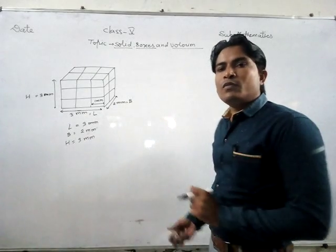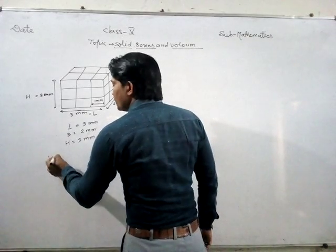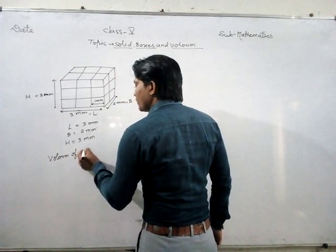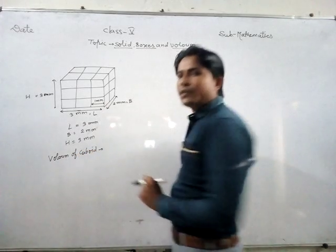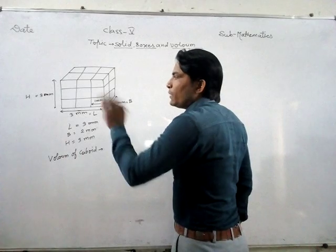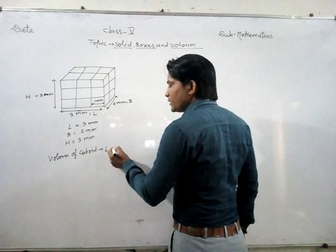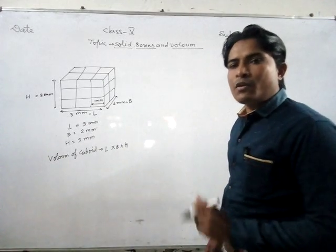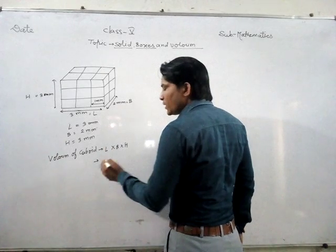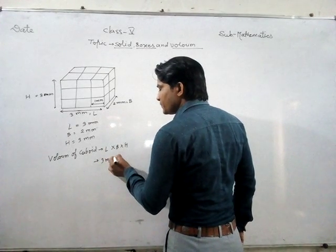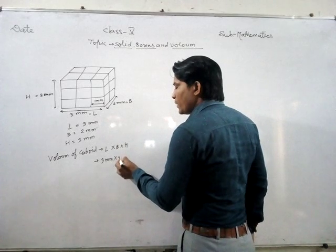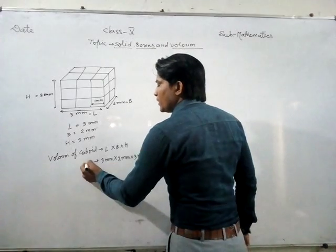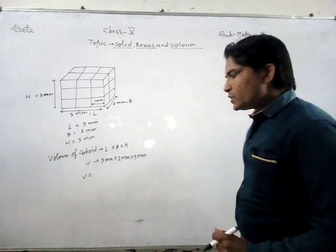So we want to find the volume. Volume of cuboid — the volume of cuboid is equal to multiplying all sides. It means length into breadth into height. This is the volume of cuboid. So it is equal to length: length is how much? Three mm, multiplied by breadth, which is two mm, multiplied by height, again three mm. So volume is equal to how much?